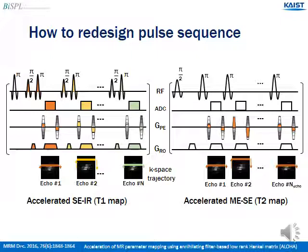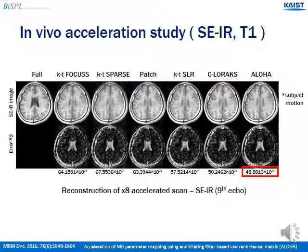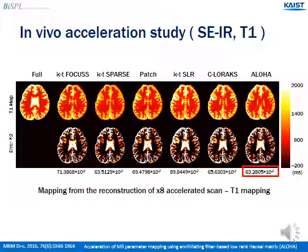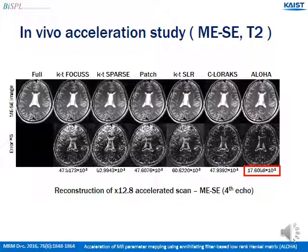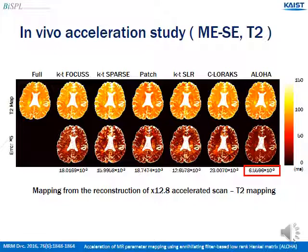For the in vivo accelerated study, we redesigned two pulse sequences for random sampling. This is the reconstruction result from in vivo accelerated data. Unfortunately, there is head movement between the full and the accelerated T2 scan. However, you can see the aliasing-free image in the ALOHA results compared to other compressed sensing algorithms which have aliasing. For the T1 mapping result, ALOHA shows minimum errors. For the accelerated T2 scan, ALOHA shows great performance as the minimum error shows, and the same results appear in the T2 map reconstruction results.